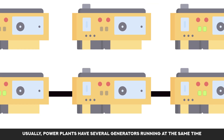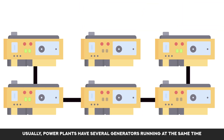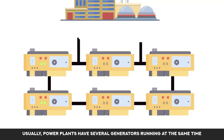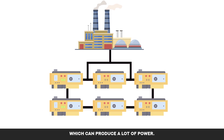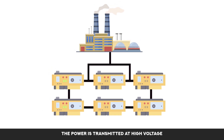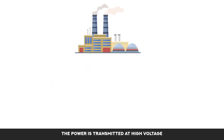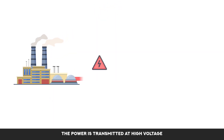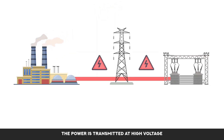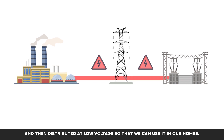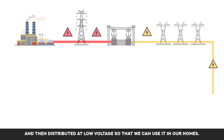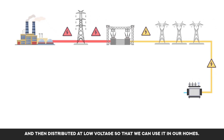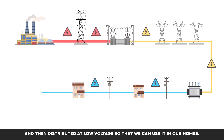Usually, power plants have several generators running at the same time, which can produce a lot of power. The power is transmitted at high voltage and then distributed at low voltage so that we can use it in our homes.